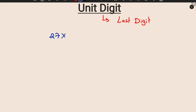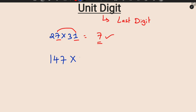Suppose you have 27 into 31. The last digit is 7 and the last digit is 1. 7 into 1 is 7. So simple — the unit digit is 7. Another example: 147 into 286. The last digit is 7 and 6. 7 into 6 is 42. The last digit of 42 is 2, so 2 is the unit digit. We only need the last digit.